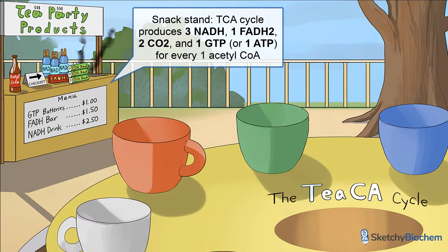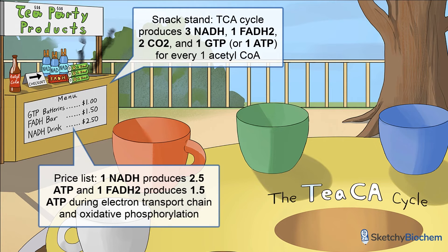Pop quiz! How much ATP is made during the TCA cycle if we start with 1-acetyl-CoA? The snack stand sells NADH drinks for $2.50 and FADH2 bars for $1.50, just like how 1-NADH will produce 2.5 ATP and 1-FADH2 will make 1.5 ATP during the electron transport chain and oxidative phosphorylation. The TCA cycle produces 3 NADH, 1-FADH2, and 1 GTP or ATP per 1-acetyl-CoA. So, 3 × 2.5 + 1 × 1.5 + 1 = 10 ATP. 1-acetyl-CoA produces 10 ATP.